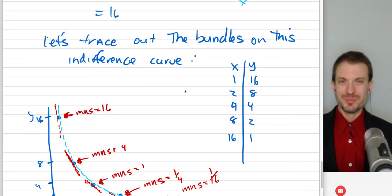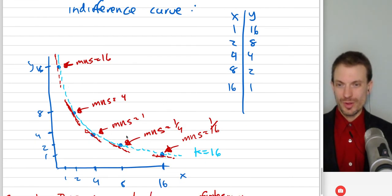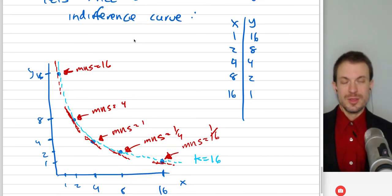Anyway, so hope that helps clarify, kind of visualizing what the indifference curve is doing. Remember, the indifference curve is all the bundles that maintain that level of utility, because by definition of an indifference curve, the agent is indifferent between anything on that particular curve. So anyway, hope that helps.